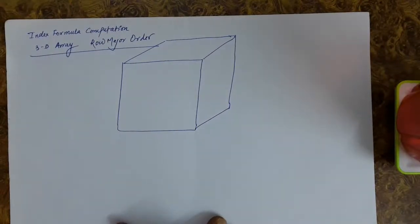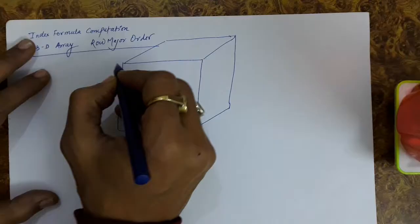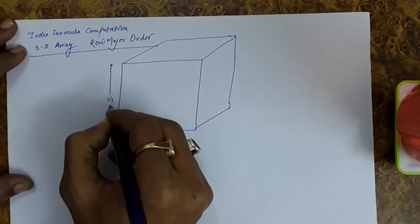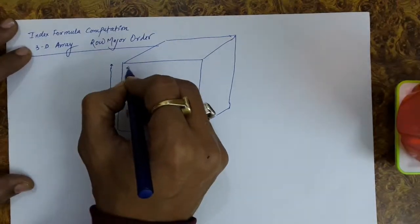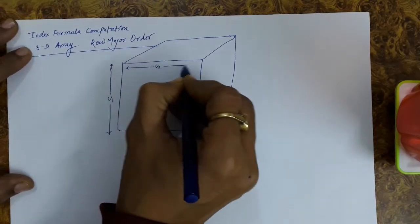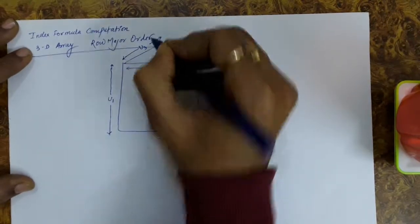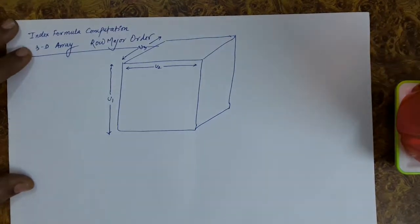In this lecture we will learn about the index formula computation for a 3D array wherein the elements are stored in a row major order fashion. The dimensions here are: the first dimension representing u1, the second dimension representing u2, and the third dimension representing u3. We can realize this in the form of a cuboid with the dimensions u1, u2, and u3 respectively.